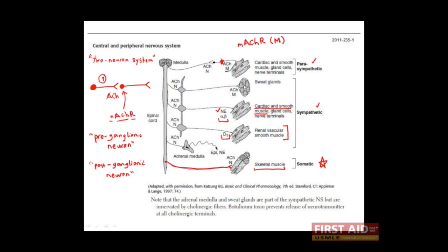Interestingly, neurons of the sympathetic system can also release acetylcholine. This occurs in sweat glands. When acetylcholine is released here, it binds to muscarinic acetylcholine receptors found on sweat glands, which then stimulates these glands to produce sweat — a common feature of the fight or flight response.